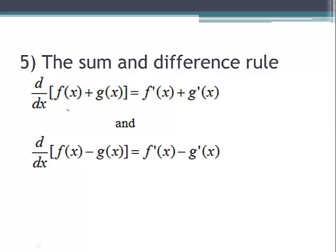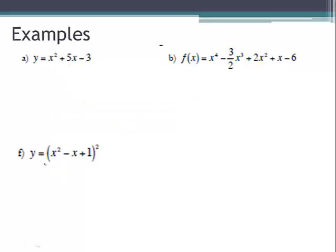Sum and difference rule: take a minute, look at these, and write them down. Essentially, if you have multiple terms, take the derivative of each individual term separately. For example a: y prime — take the derivative of x squared using power rule, bring the 2 in front to get 2x, plus the derivative of 5x, which is 5 times the derivative of x equals 5 times 1. The derivative of a constant is zero. So y prime equals 2x plus 5.